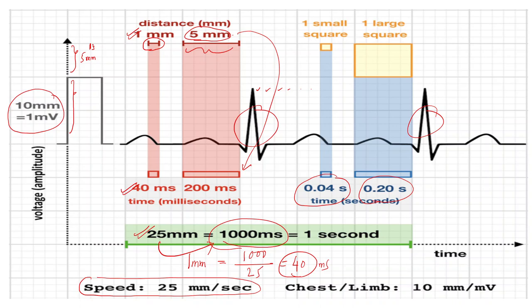Between the two R waves you can count 15 small boxes. So 1500 divided by 15 gives 100 beats per minute. Since 15 small boxes equal 3 large boxes, 300 divided by 3 large boxes also gives 100. So in either way you can calculate, and here the rate is 100 beats per minute.